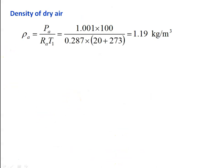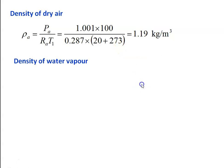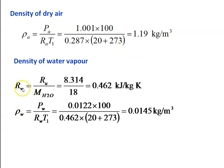Density of dry air: ρA = PA / (RA × T1) = (1.001 × 100) / (0.287 × (20 + 273)) = 1.19 kg/m³. Gas constant for water vapor: Rw = 8.314 / 18 = 0.462 kJ/kg·K. Density of water vapor: ρW = Pw / (Rw × T1) = (0.0122 × 100) / (0.462 × (20 + 273)) = 0.0145 kg/m³.